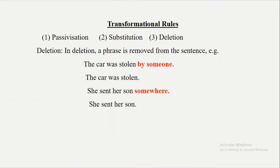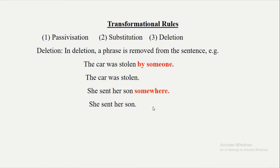The third rule in transformational rules is deletion — a phrase is removed from the sentence. For example: 'The car was stolen by someone' — we delete 'someone' and the sentence becomes 'The car was stolen.' 'She sent her son somewhere' — we remove 'somewhere' and the sentence becomes 'She sent her son.' By deletion, there is no change in the meaning of the sentence, and we have transformed the sentence from one syntactic form to another.